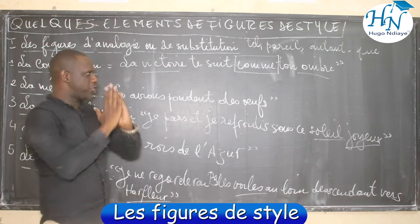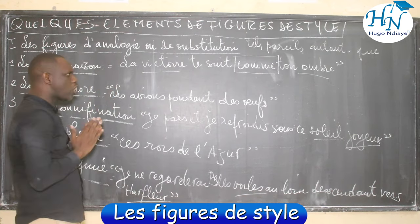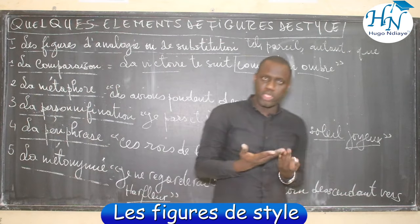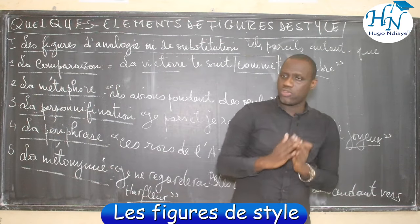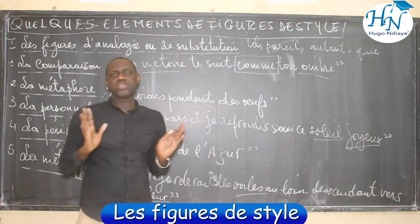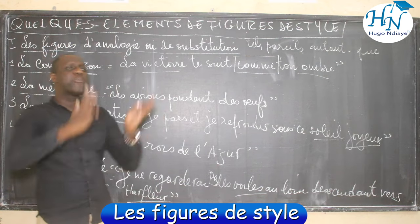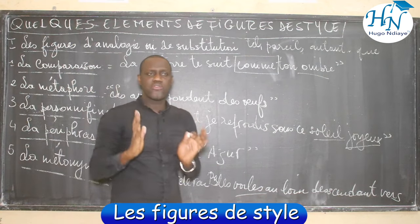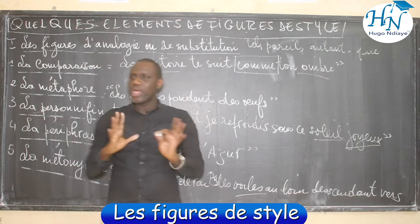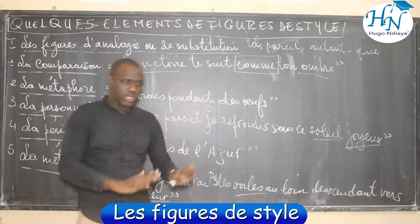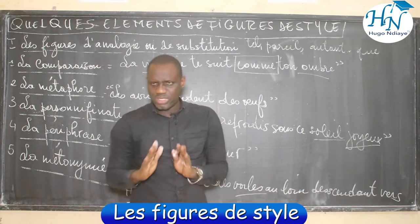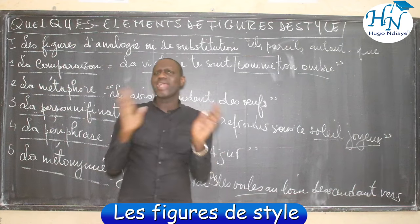Après les figures d'analogie et de substitution, on a le grand deuxième ensemble : les figures d'amplification ou d'atténuation. Dans amplification, nous avons amplifié — ce sont les figures qui servent à exagérer. Dans atténuation, nous avons adoucir — ce sont les figures qui servent à adoucir.